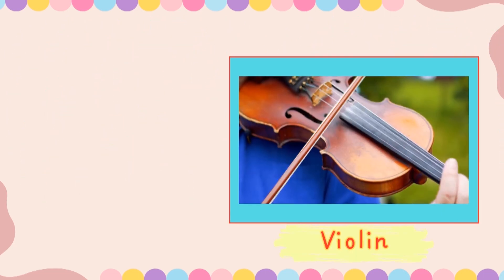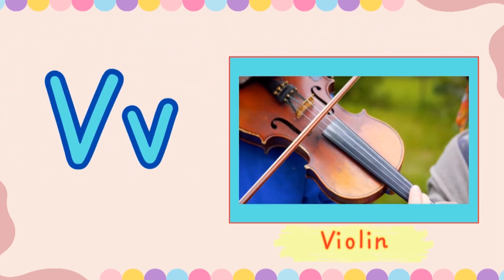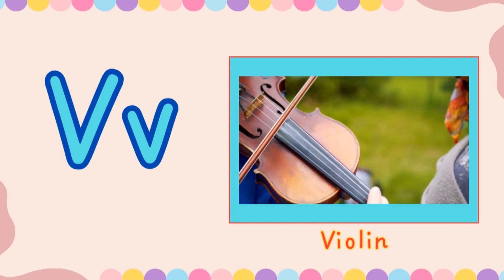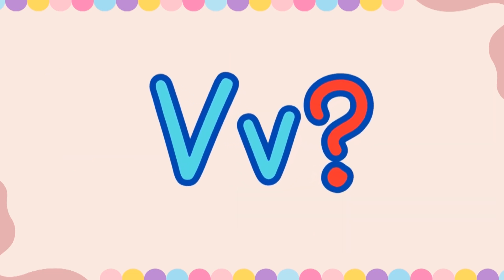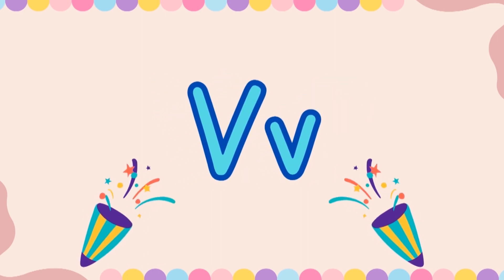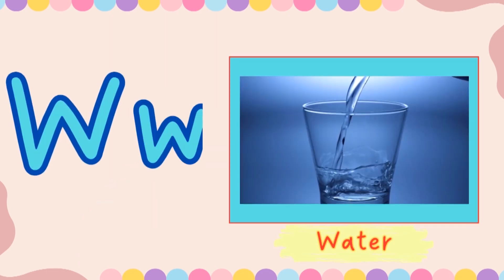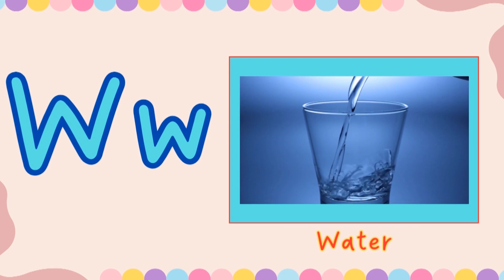U! Very good! This is letter V. And V is for Violin. What letter is this? V! Very good! This is letter W. And W is for Water. What letter is this? W!